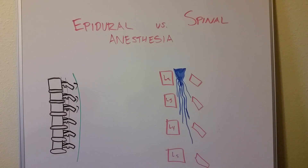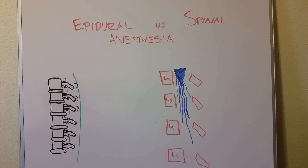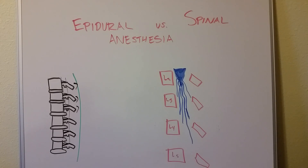Epidurals can be given anywhere along the vertebral column, whereas spinals can't. With epidurals, they usually leave a catheter — a small plastic tube — in the space. Once they find it and place it, they can continuously pump drugs into that space over time. Labor and delivery isn't a 30-minute process; it can take up to a day or longer. So they leave that catheter in place so they don't have to keep sticking you with a needle in your back, especially when you're trying to push out a baby.